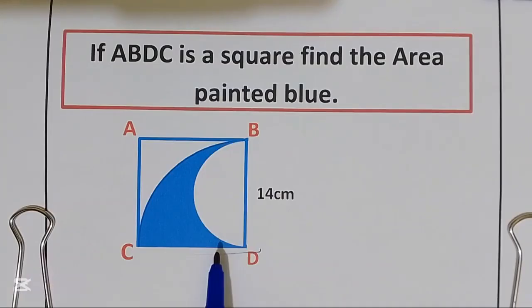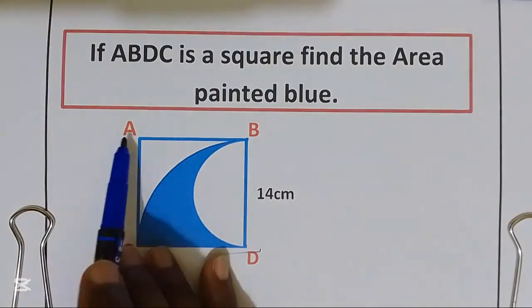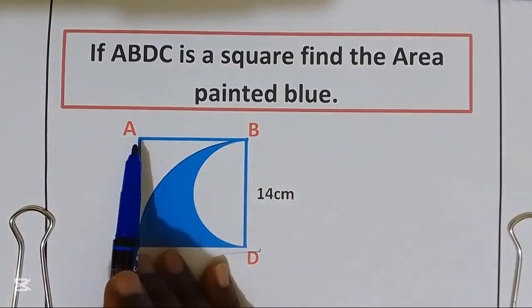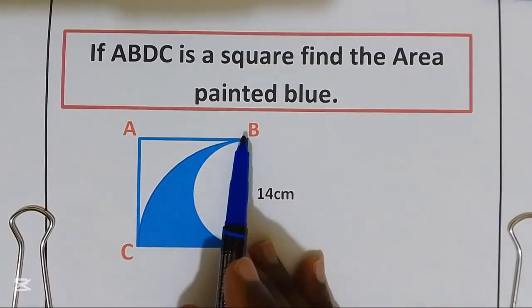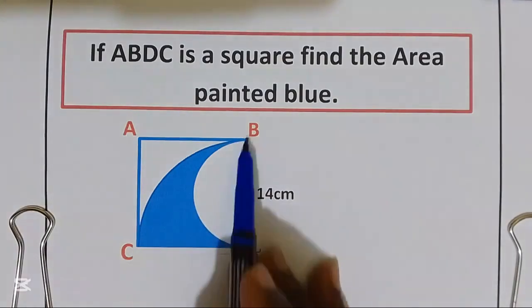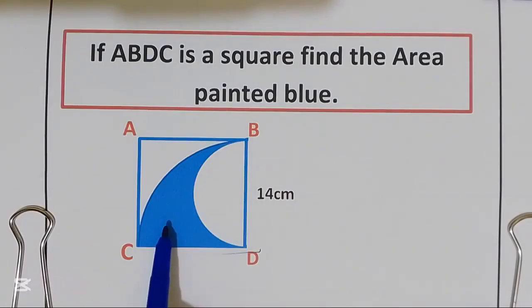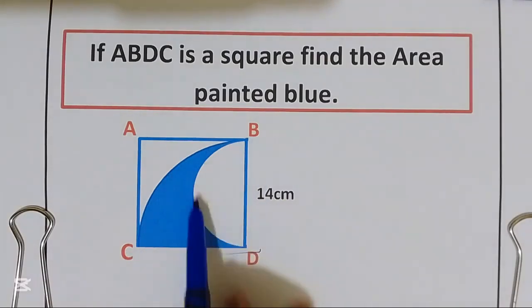This diagram has three figures inside. We have a square, we have a semi-circle, and a quarter-circle. So to get the area painted blue, we are going to take a quarter-circle, take away a semi-circle.